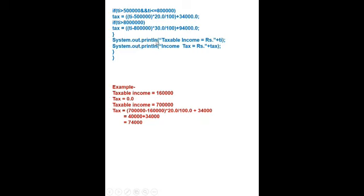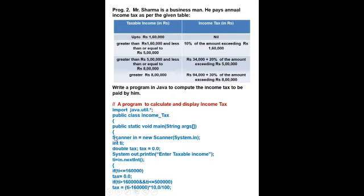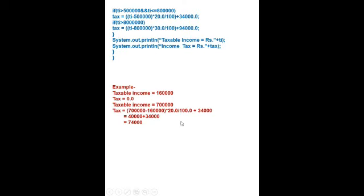Now, System.out.println("Taxable income: " + ti) and System.out.println("Income tax = " + tax). Then we will close two curly brackets at the end, because we opened three times and closed one already during the program.